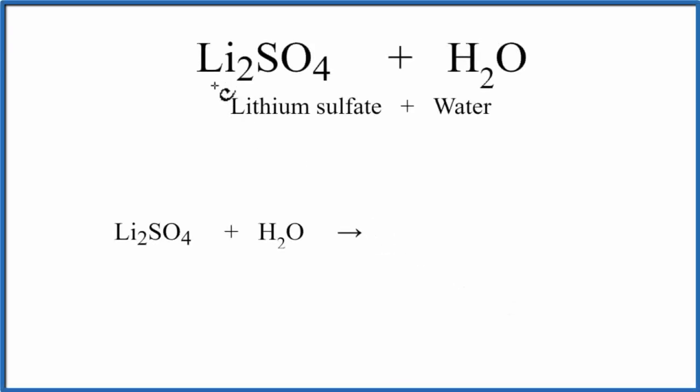In this video, we'll write the equation for Li2SO4 plus H2O. That's lithium sulfate plus water. So lithium, that's a metal, and then SO4, that's called a polyatomic ion. It's known as the sulfate ion, and it is made up of nonmetals. So we have a metal and nonmetals, that's an ionic compound.